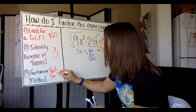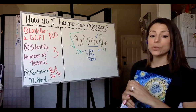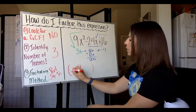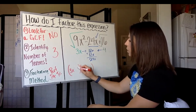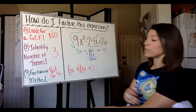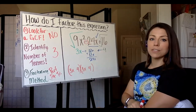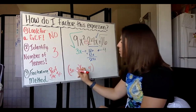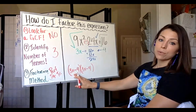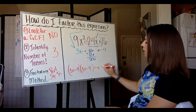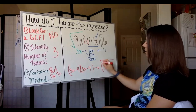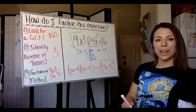For a perfect square trinomial, it only takes two steps to factor. Set up two identical binomials: the first term is the square root of the first term, 3x, and the second term is the square root of the last term, 4. The middle term is negative, which means both binomials contain subtraction: 3x minus 4 times 3x minus 4. We can write that as 3x minus 4 squared. That's how you factor a perfect square trinomial.